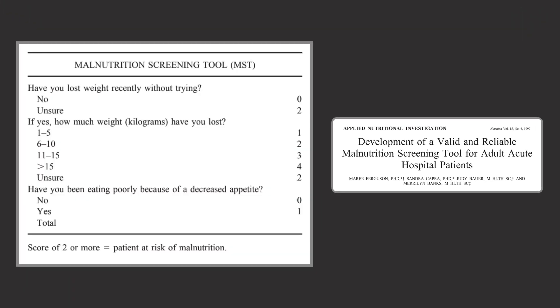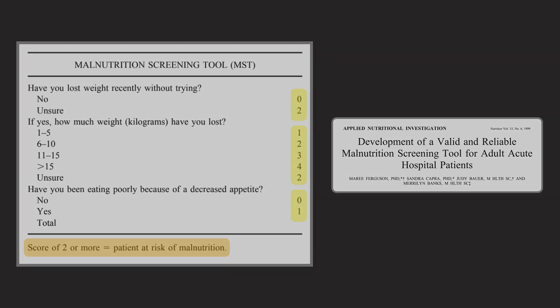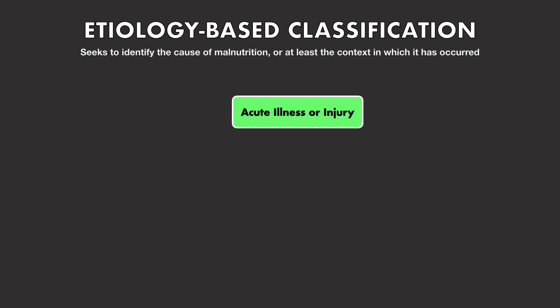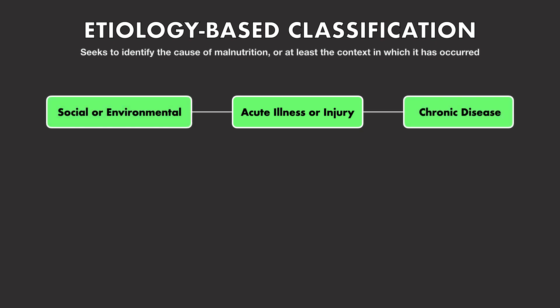The Malnutrition Screening Tool is composed of three simple questions: Have you lost weight recently without trying? If yes, how much weight have you lost? And have you been eating poorly because of a decreased appetite? The possible responses to each question have an associated score, and if the patient receives a total score of 2 or higher, they're considered to be at risk of malnutrition and should undergo a full nutrition assessment. To complete the assessment and see if a formal diagnosis is warranted, the Academy recommends using the assessment tool created with ASPEN in 2012. This tool established an etiology-based classification system, which seeks to identify the cause of malnutrition or the context in which it occurred. The first step is to determine which category the patient belongs in: acute illness or injury, chronic disease, or social or environmental circumstances.